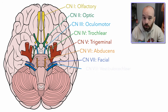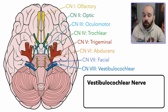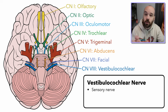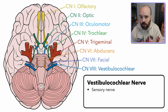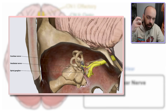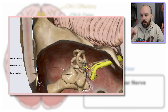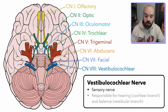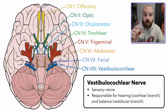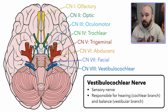Next we have the vestibulocochlear nerve, cranial nerve number eight. It's a sensory nerve. That word vestibulocochlear is a combination of vestibule and cochlear — vestibule refers to the main bony structure of the inner ear with the semicircular canals, which detect balance, while cochlea refers to the part detecting sound. There are two branches: one going to the semicircular canals for balance, and one going to the cochlea for sound. So this nerve is responsible for both hearing and balance.